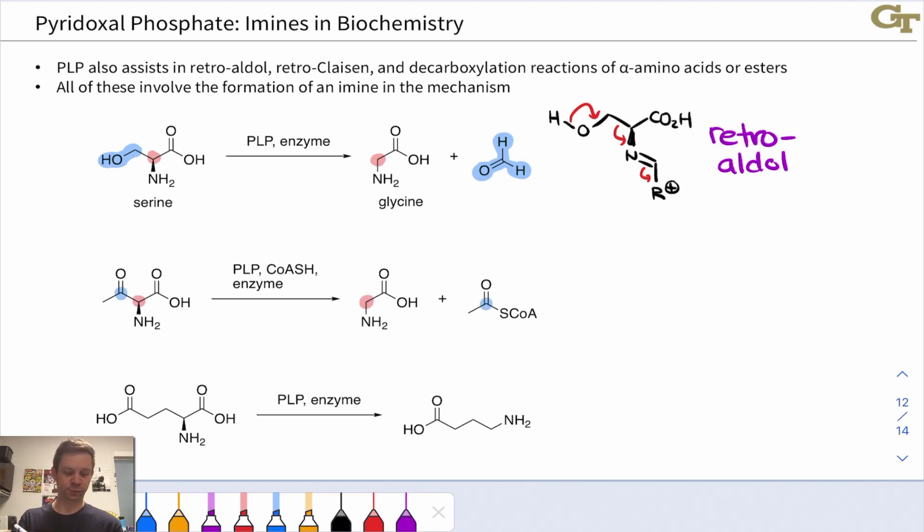PLP is also great for retro-Claisen reactivity, and that's what's going on here. Notice we have a 1,3-dicarbonyl structure here, and PLP enables this to go back to the separated amino acid—here it's glycine again—and acetyl-CoA via a retro-Claisen type of process. So CoA adds in and then an elimination occurs via a PLP imine, and formation of this imine is critical to give a place for those electrons to land when glycine is eliminated. Hydrolysis of that PLP imine ultimately gives glycine back here. So this is a retro-Claisen process where formation of a PLP imine enables an elimination.